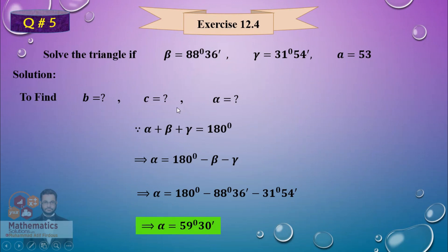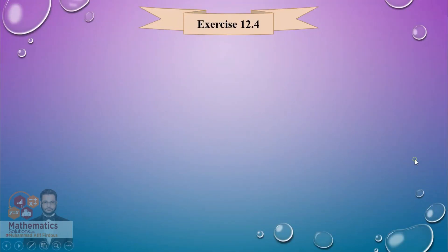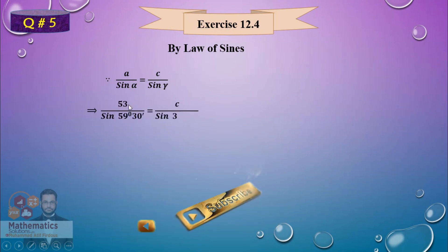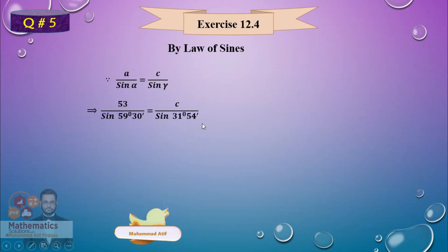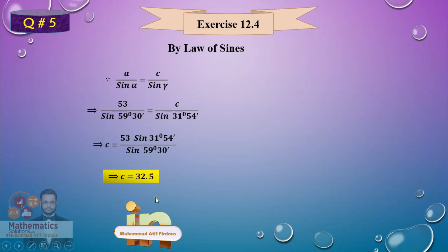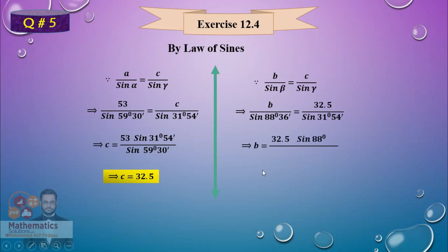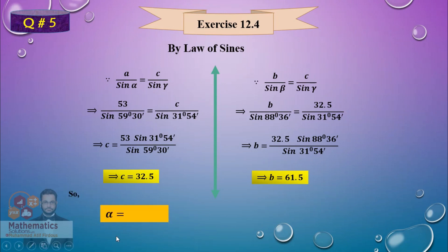Now find the two sides B and C using the Law of Sines. Taking the A and C combination — A, alpha, and gamma are all known — we get C = 53 × sin31° / sin(relevant angle), simplifying to C = 32.5. Then taking the B and C combination — beta, C = 32.5, and gamma are known — cross-multiplying gives B = 61.5.